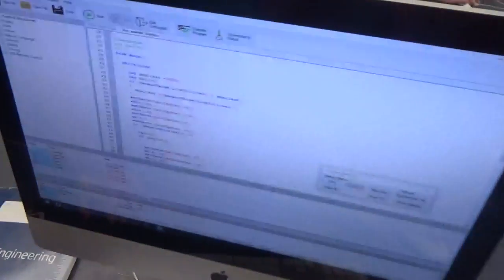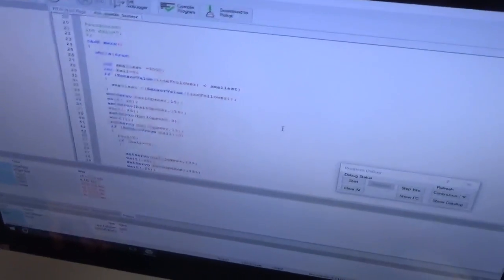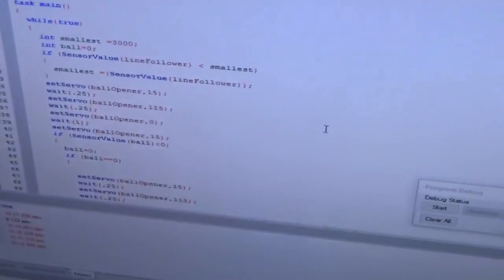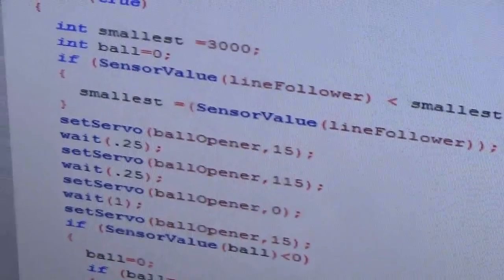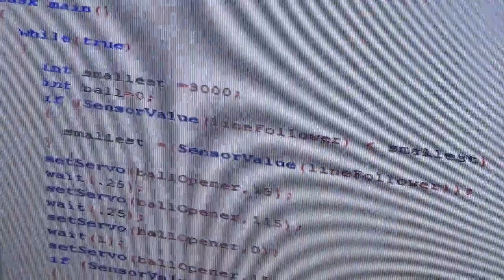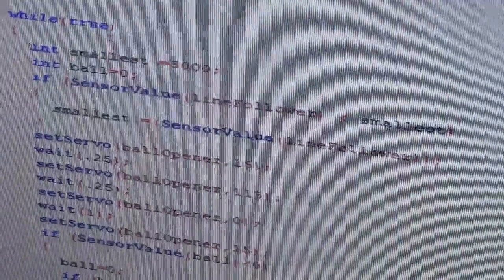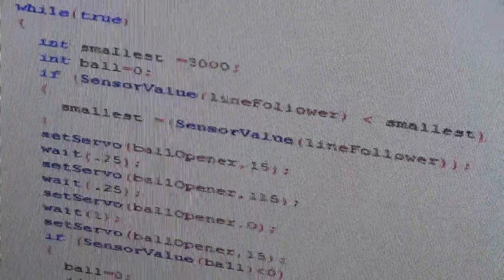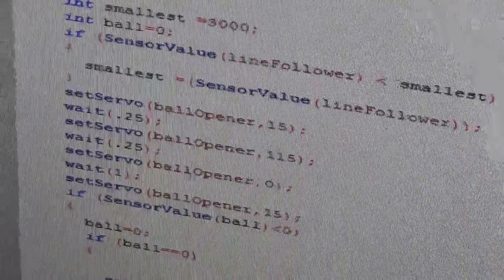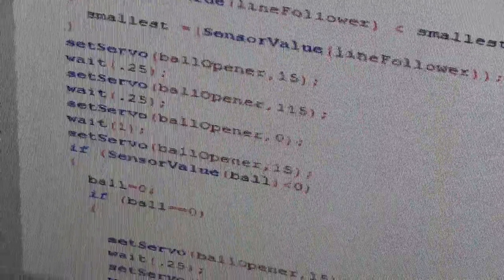This is the program. What I chose to do, following Mr. Ruben's approach, I set the value for the line follower to be the smallest, and then whatever the value is, if it's less than a certain value, it's going to read something, and that's how it determines what ball it is.